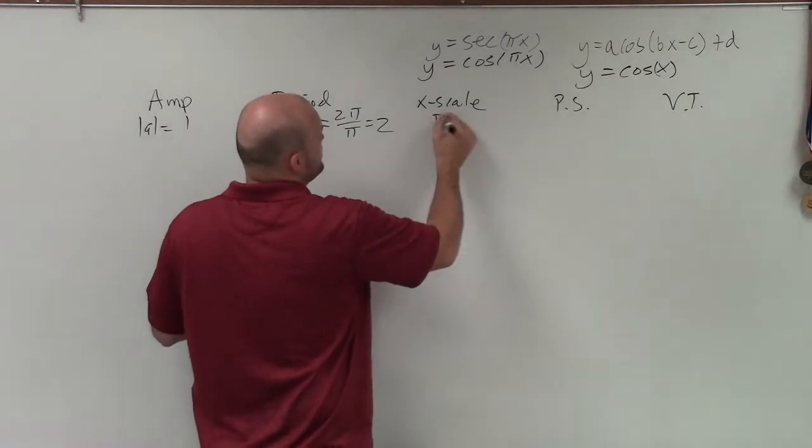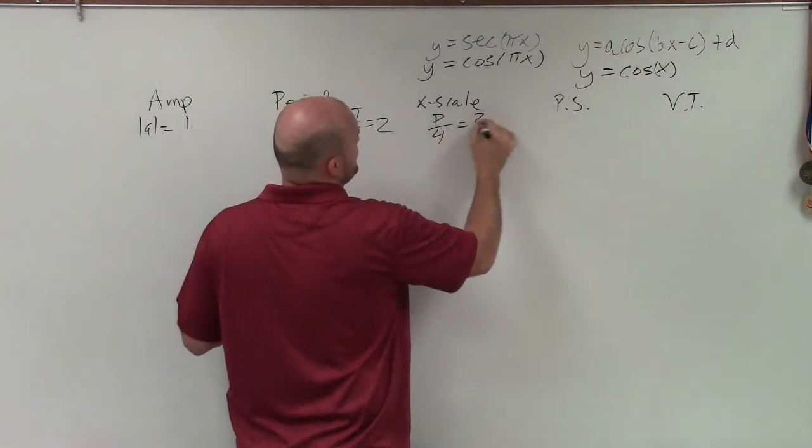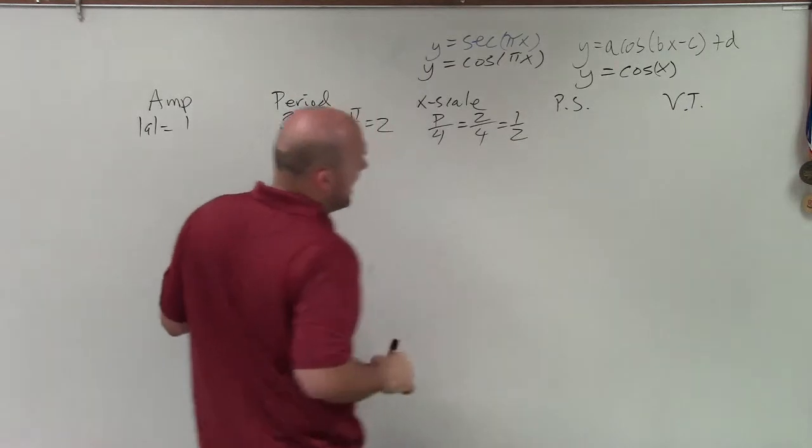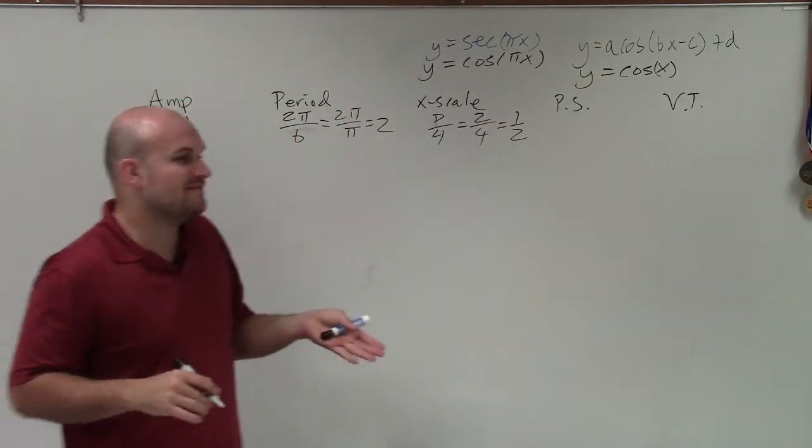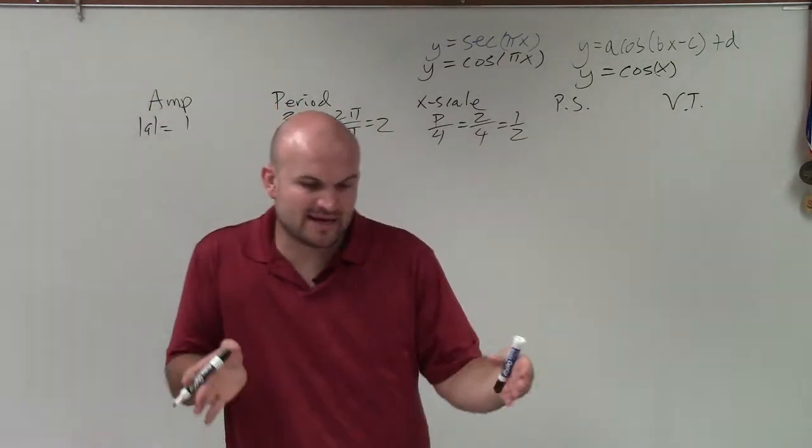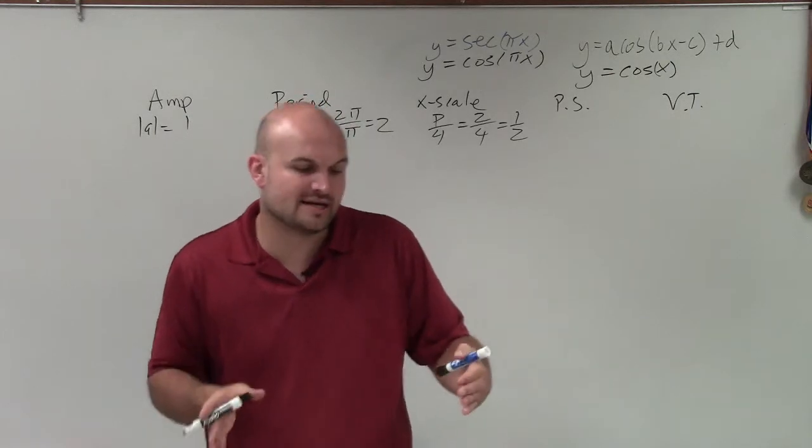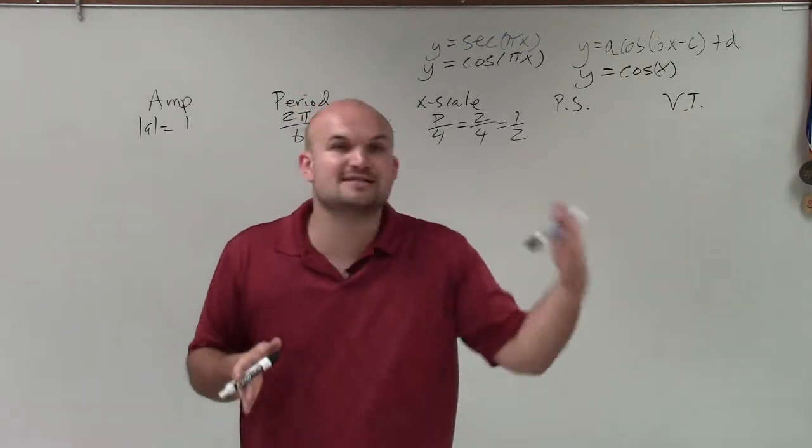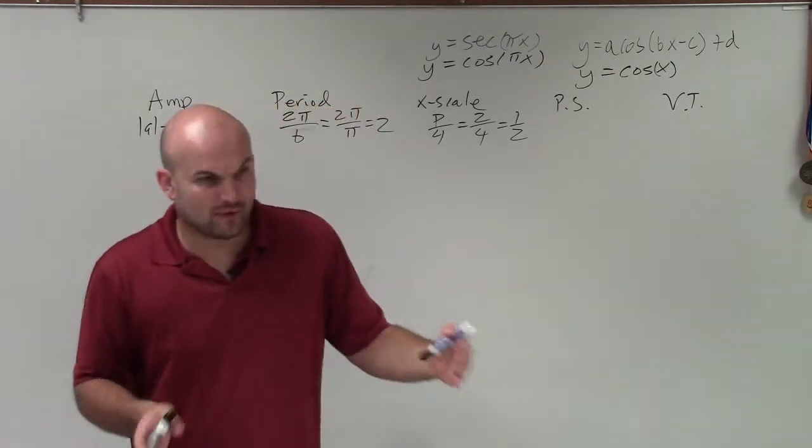Therefore, my x scale is just period divided by 4, which in this case is 2 divided by 4, which equals 1 half. To determine our phase shift, that's going to be determined from my initial period. My initial period for sine and cosine usually starts at 0, ends at 2 pi when the period, right?